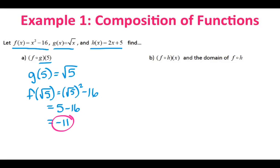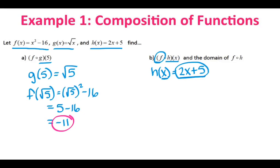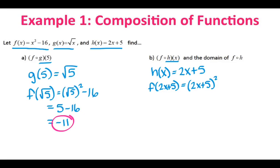Now let's look at what happens when you're working with straight functions. We have h of x, which is what we need to find first. H of x, if you look in the directions, it says h of x equals 2x plus 5. So our input was the x, and the resulting output is 2x plus 5. That means 2x plus 5 becomes the input of the f function, which is the next one. So now I am going to find f of 2x plus 5.